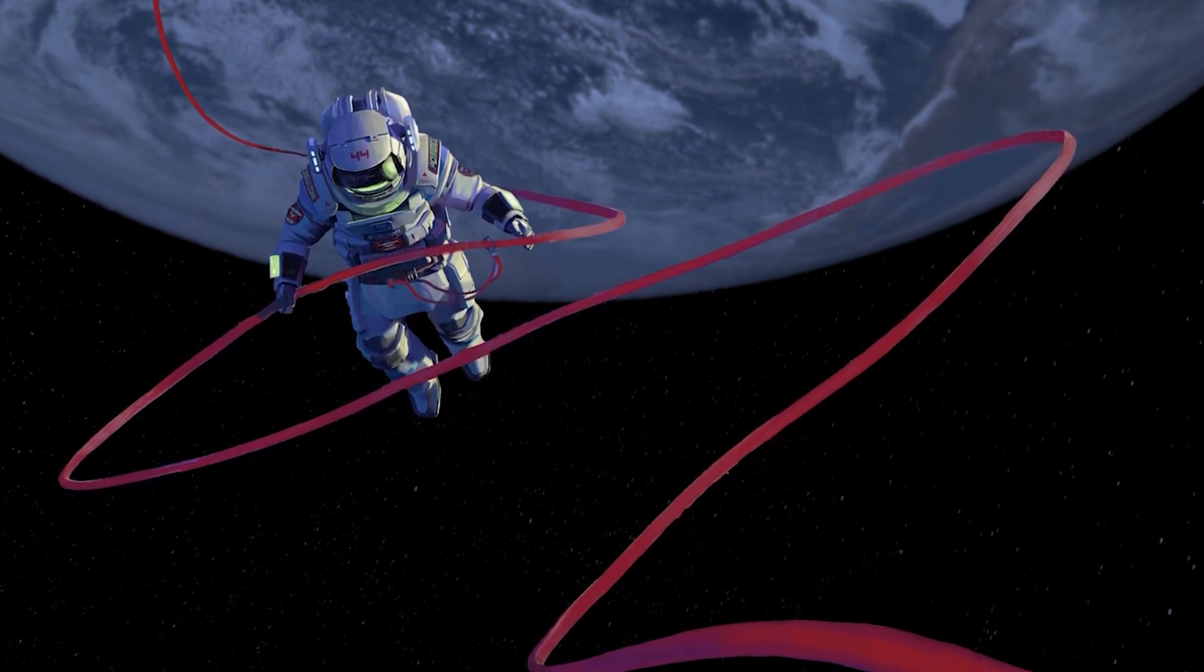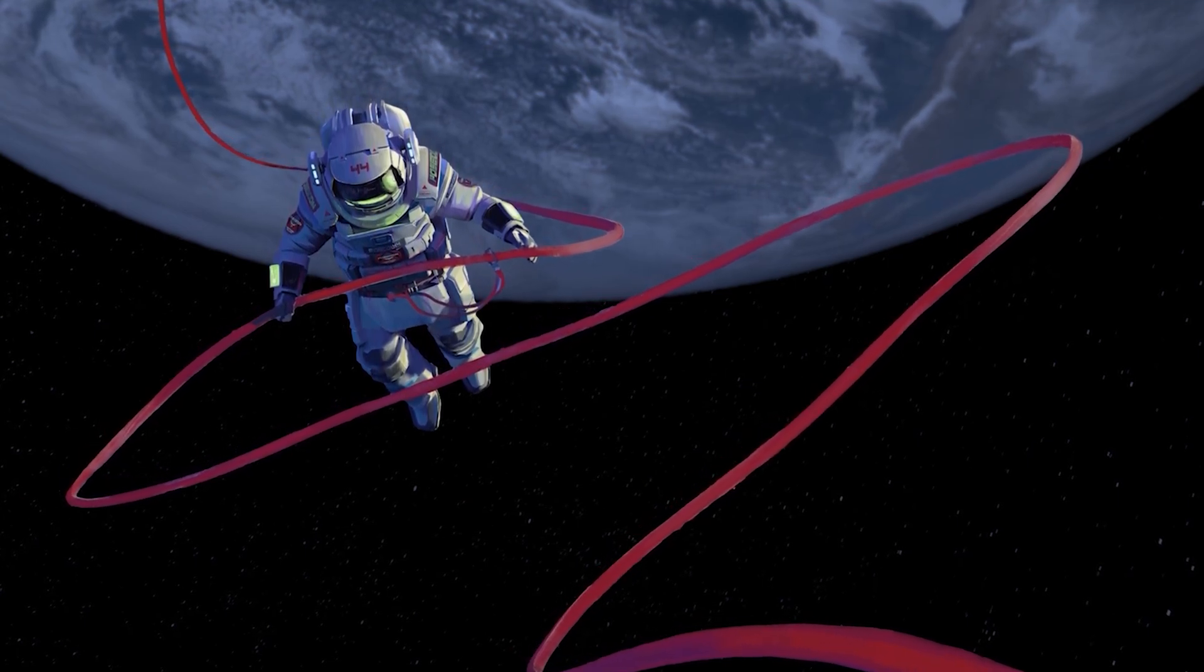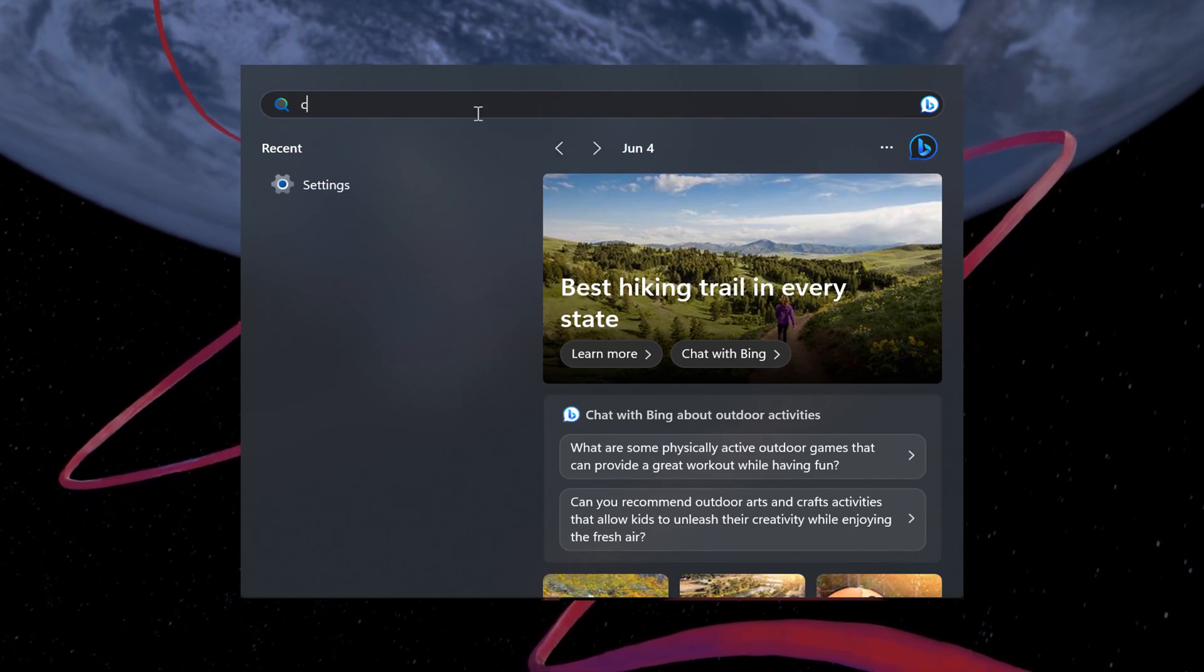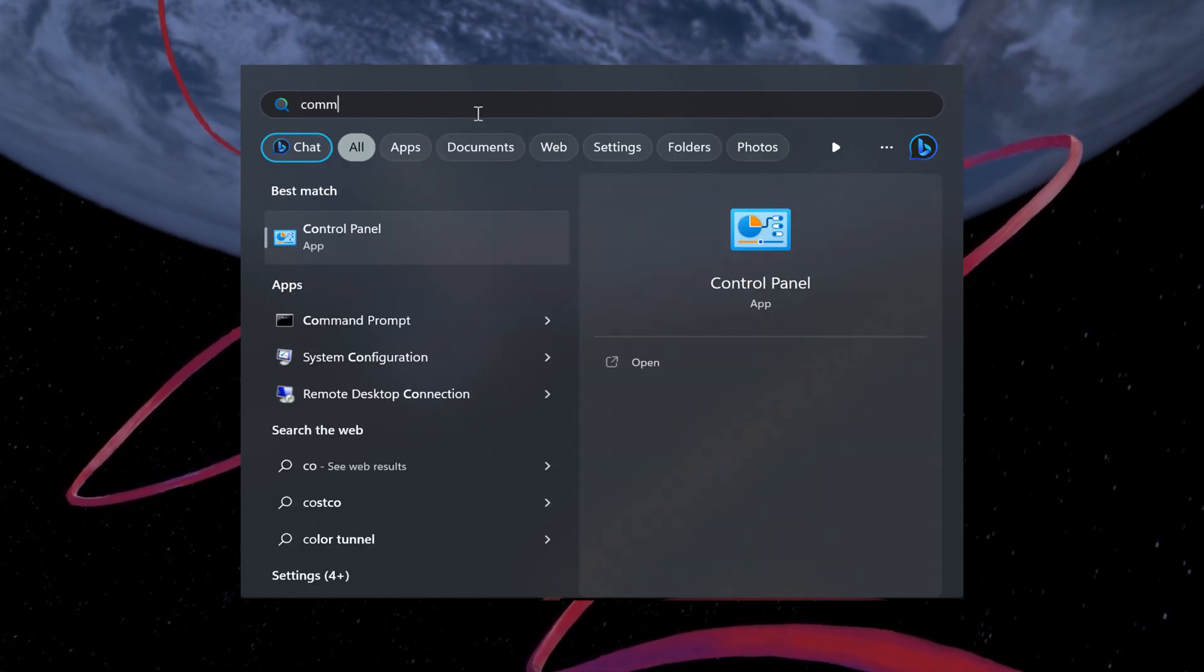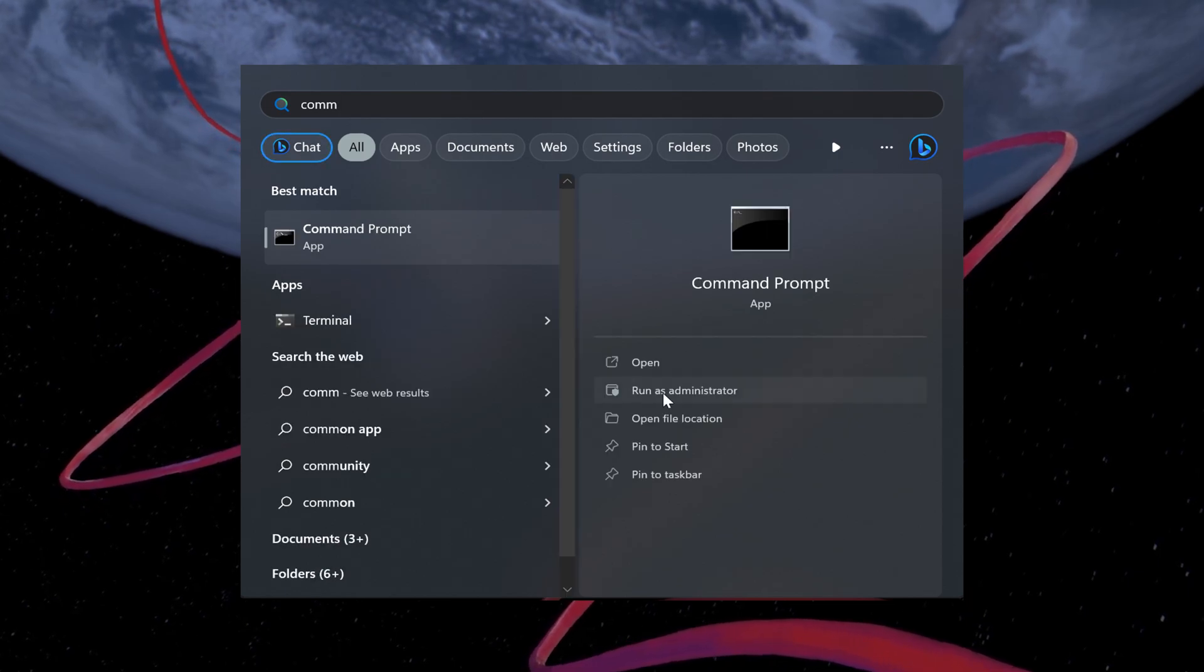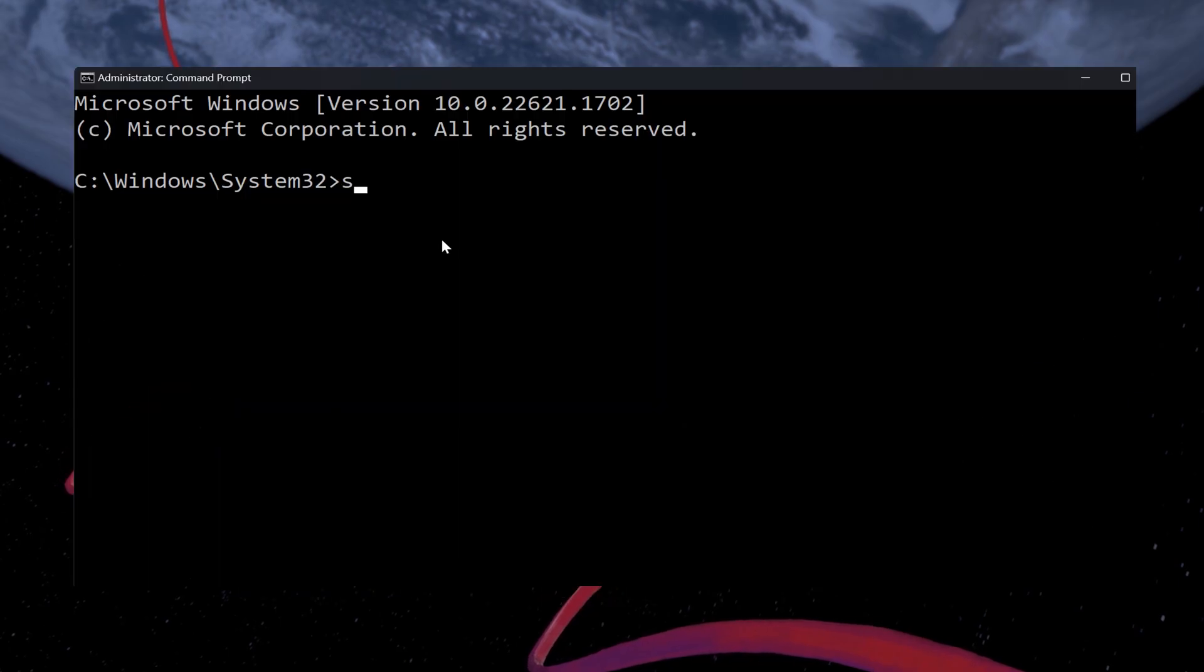The final method involves running the SFC or System File Checker and DISM or Deployment Image Servicing and Management commands to check for any corrupted system files. To do this, open your command prompt as an administrator. Use the following commands.